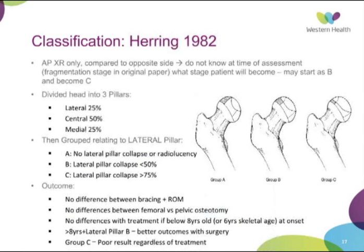The Herring lateral pillar classification divides the head into three pillars: a central pillar of about 50%, a lateral pillar of 25%, and a medial pillar of 25%. The lateral pillar shields the epiphysis from further deformity. Groups are A, B, and C: Group A has no lateral pillar collapse; Group B has less than 50% collapse; Group C has greater than 75% collapse. The difficulty is that during assessment at the fragmentation stage, you don't know if an A will become a B or a B will become a C.